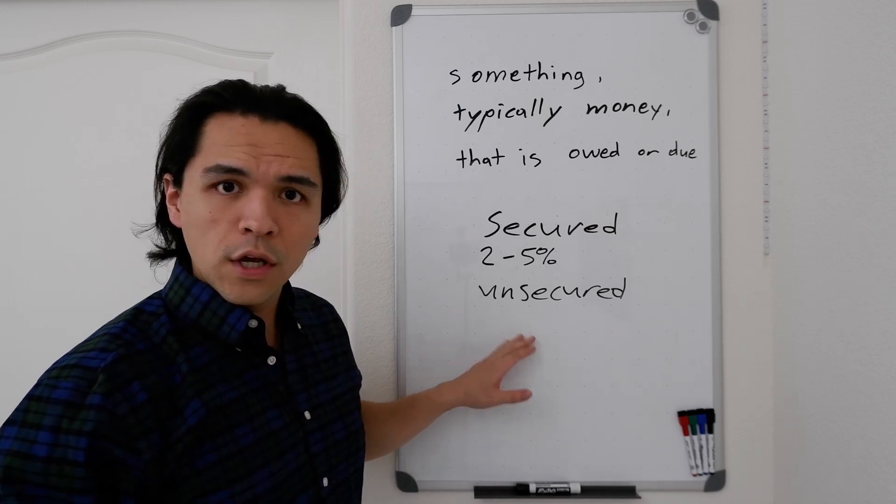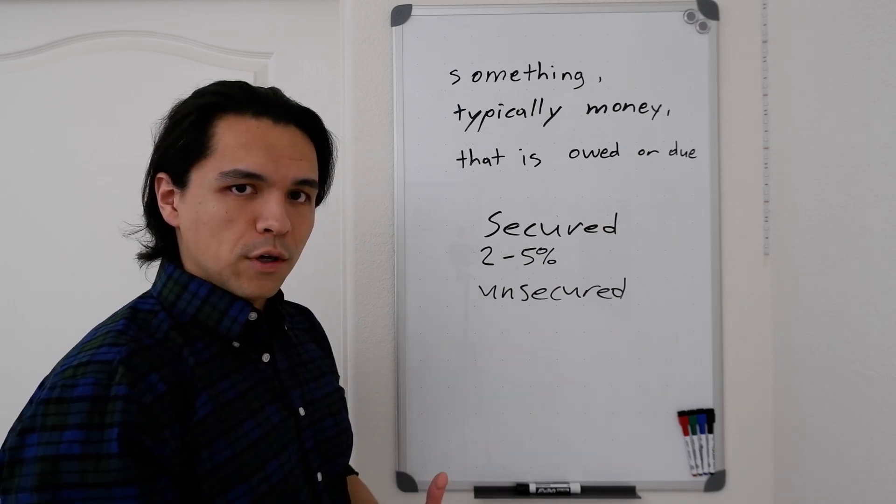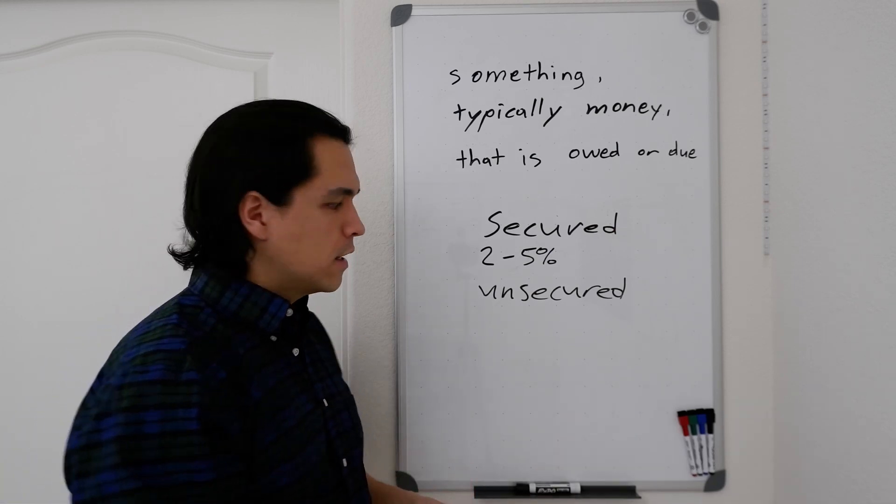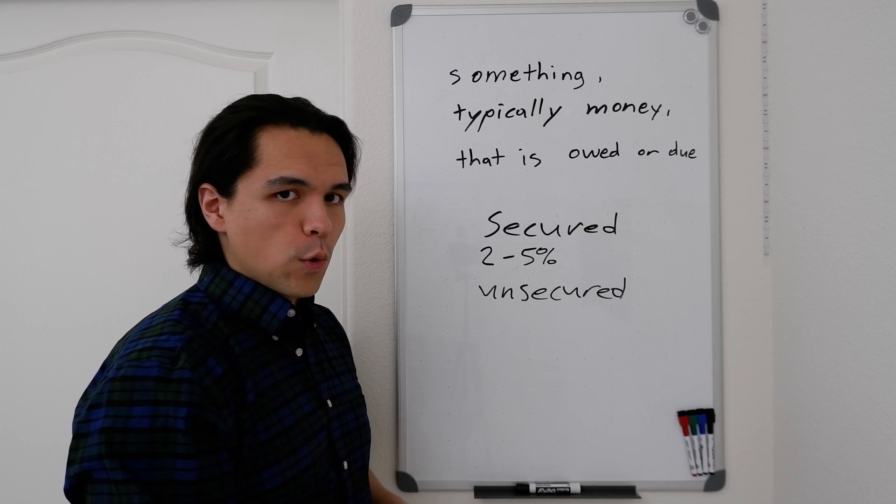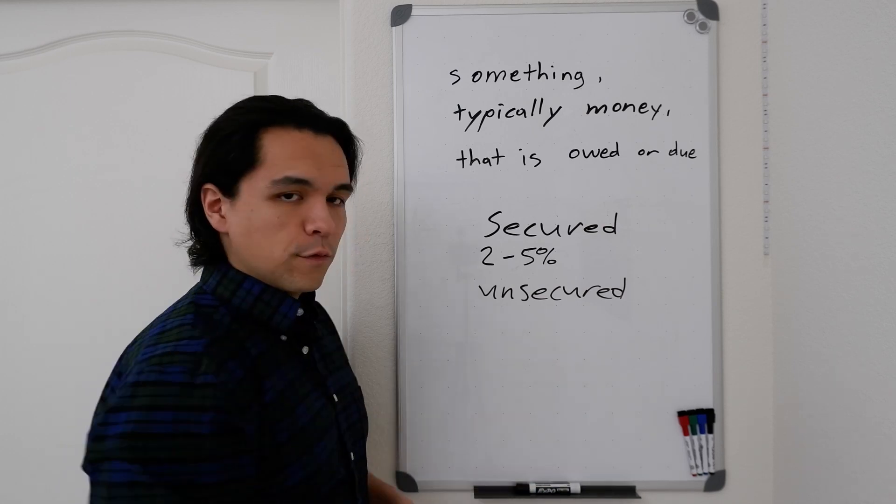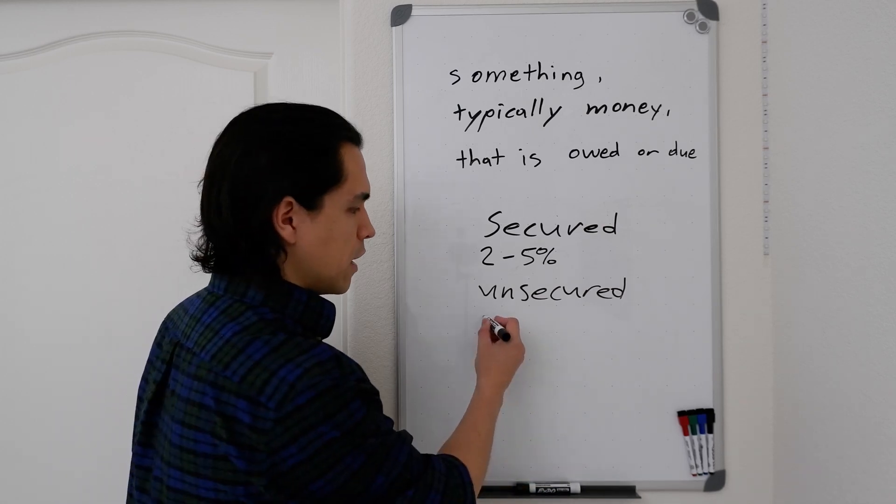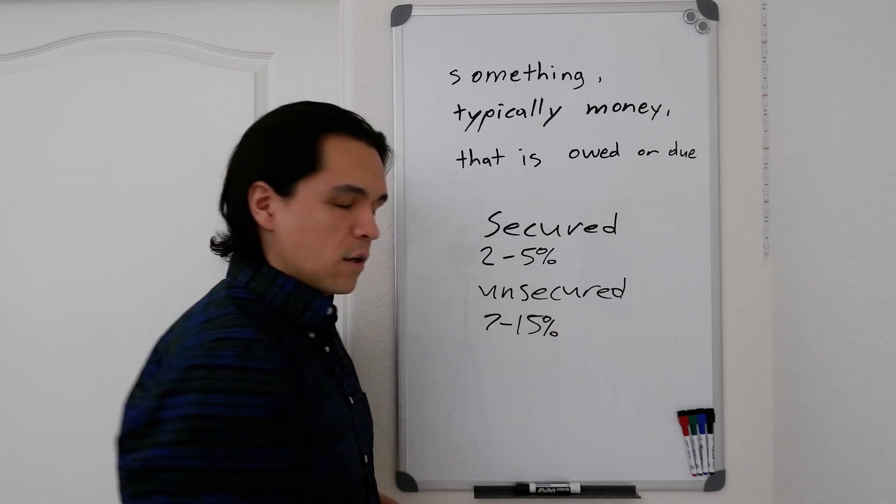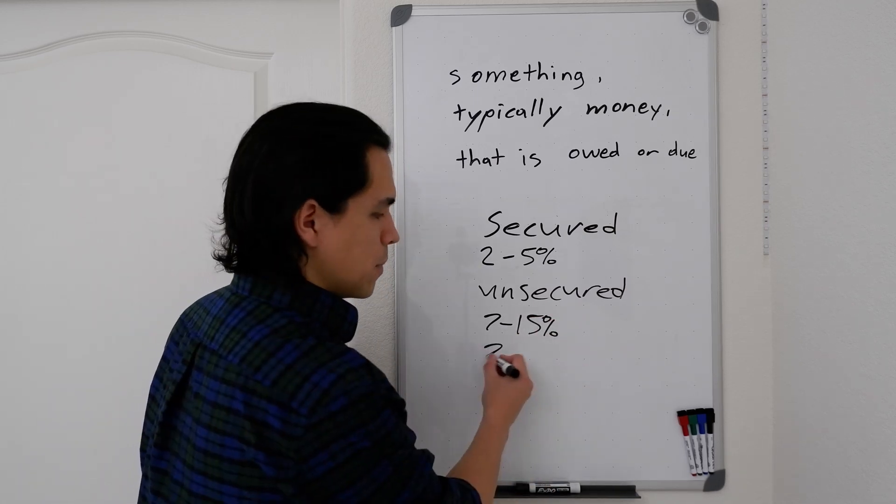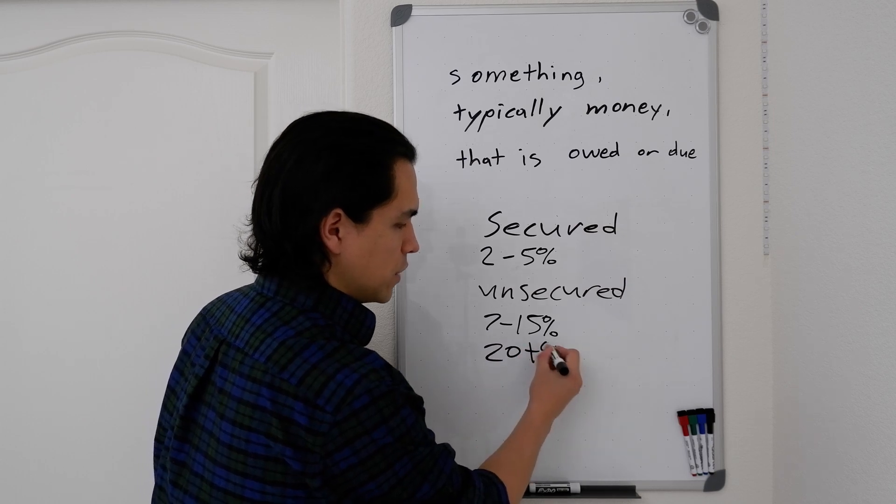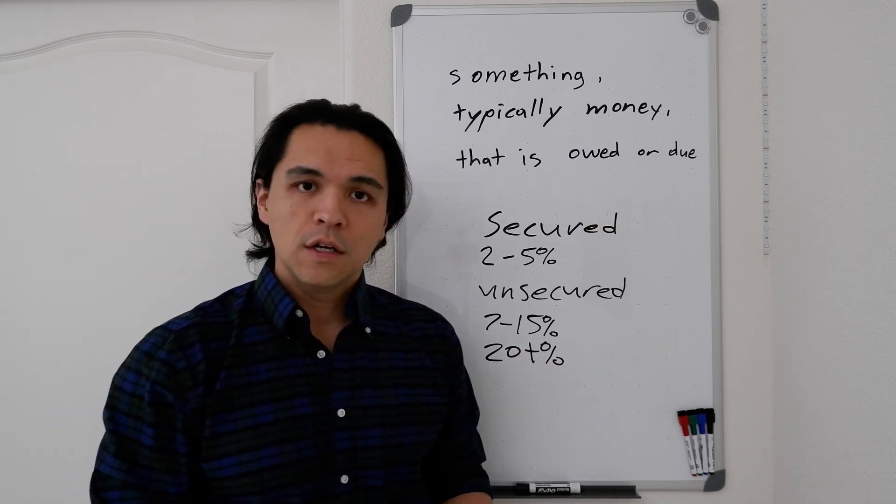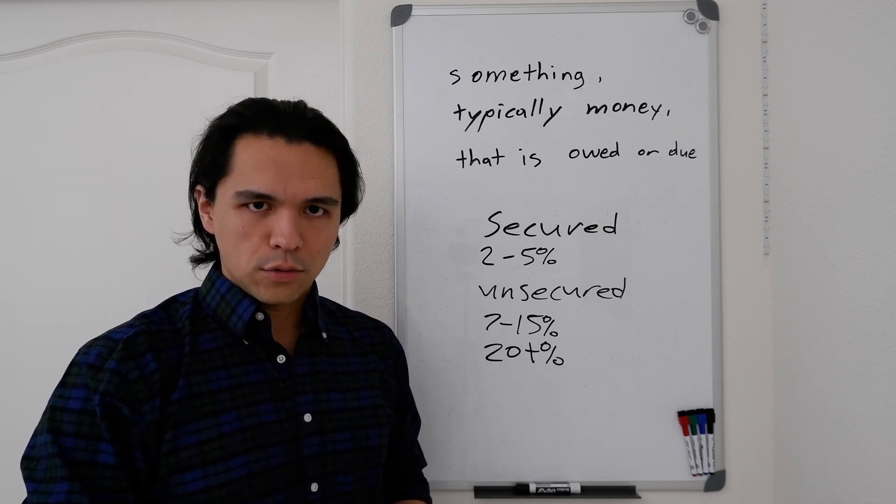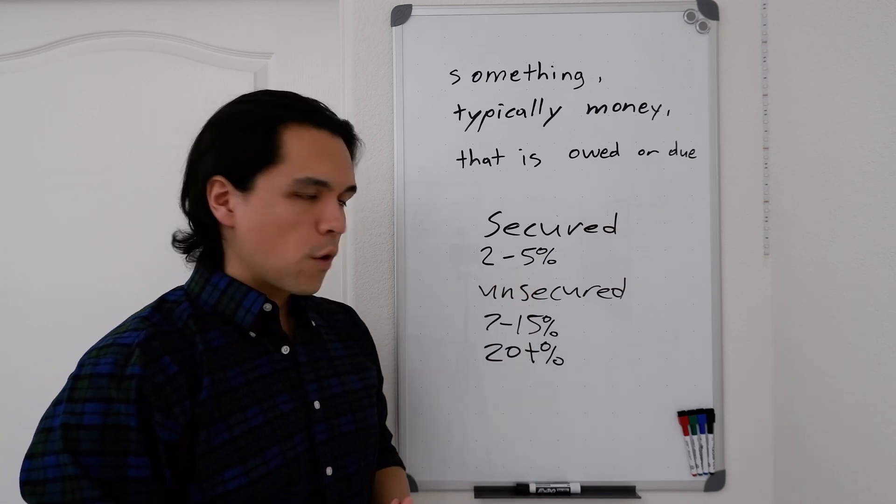On an unsecured loan, you would think of these like a personal loan or your credit card has no security behind it. These typically carry higher rates. An unsecured loan from your bank or credit union might carry a 7% to say 15% rate, whereas a credit card typically has an interest rate of 20 plus percentage points. So that's how you can kind of classify all major loans, either secured or unsecured.